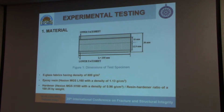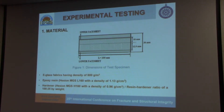These are the dimensions of our specimen. The face sheet thicknesses are not the same — we chose the thicker face sheet as the upper face sheet and the thinner one as the lower. The specimen dimensions were square, 100 millimeters by 100 millimeters. You can also see the properties of the e-glass fabrics, the epoxy, and the hardener.